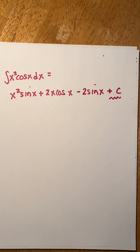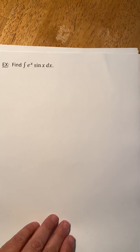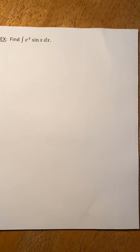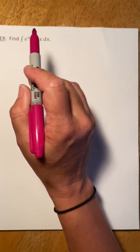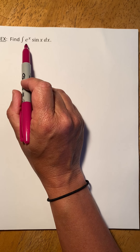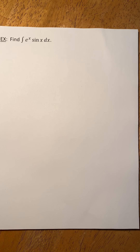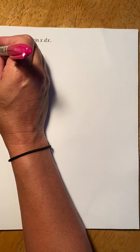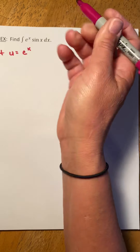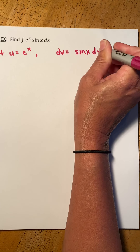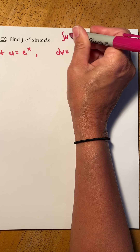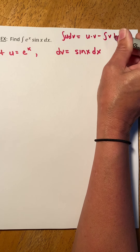Brace yourself for this one: the integral of e^x·sin(x). We want to choose u so its derivative is simpler, but e^x differentiates to itself and sin(x) differentiates to another trig function — neither becomes simpler. Both can serve as dv since we can integrate each. I'll take a shot: let u = e^x and dv = sin(x) dx. Then du = e^x dx and v = −cos(x). So the integral of e^x·sin(x) dx equals −e^x·cos(x) plus the integral of cos(x)·e^x dx.